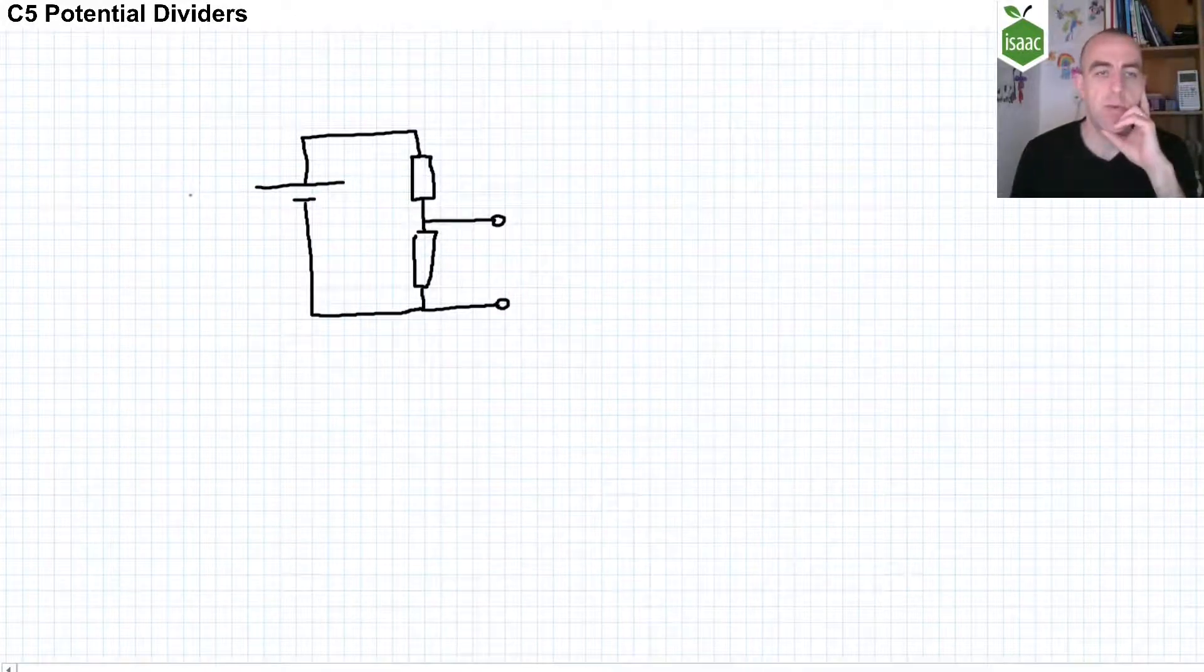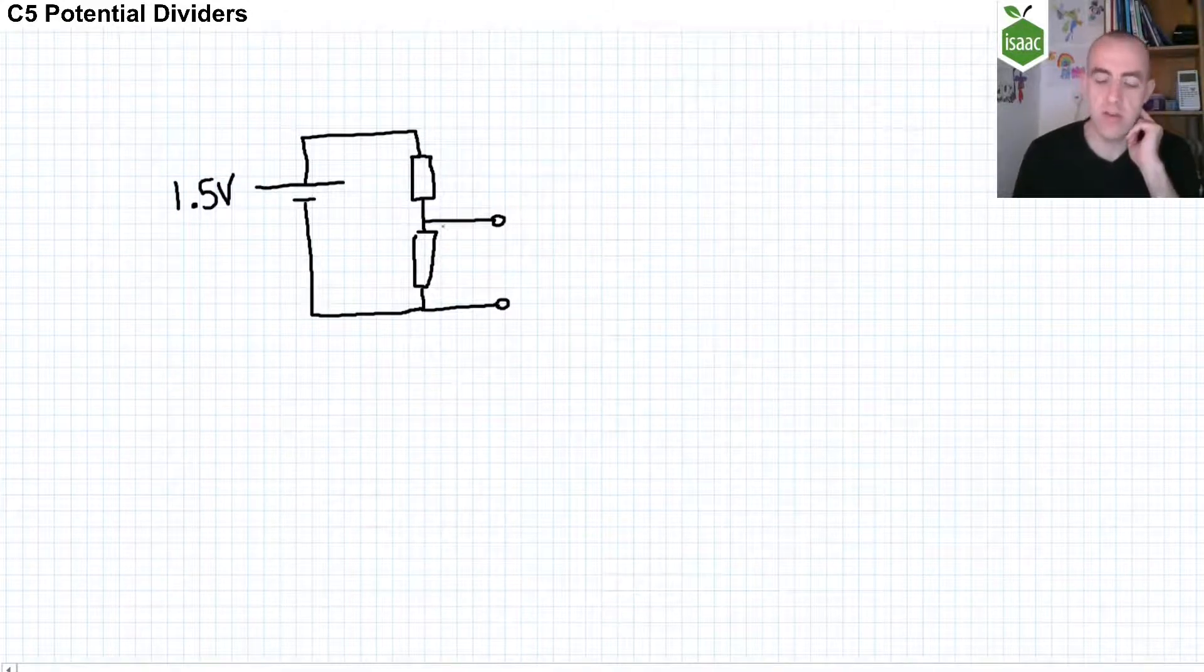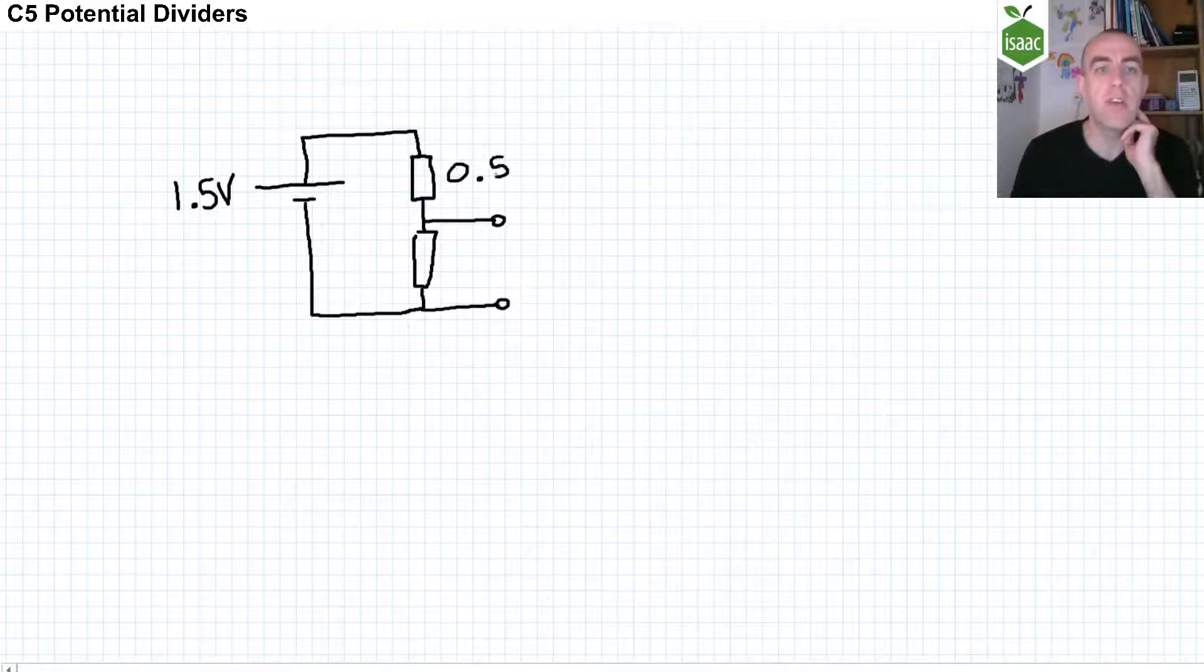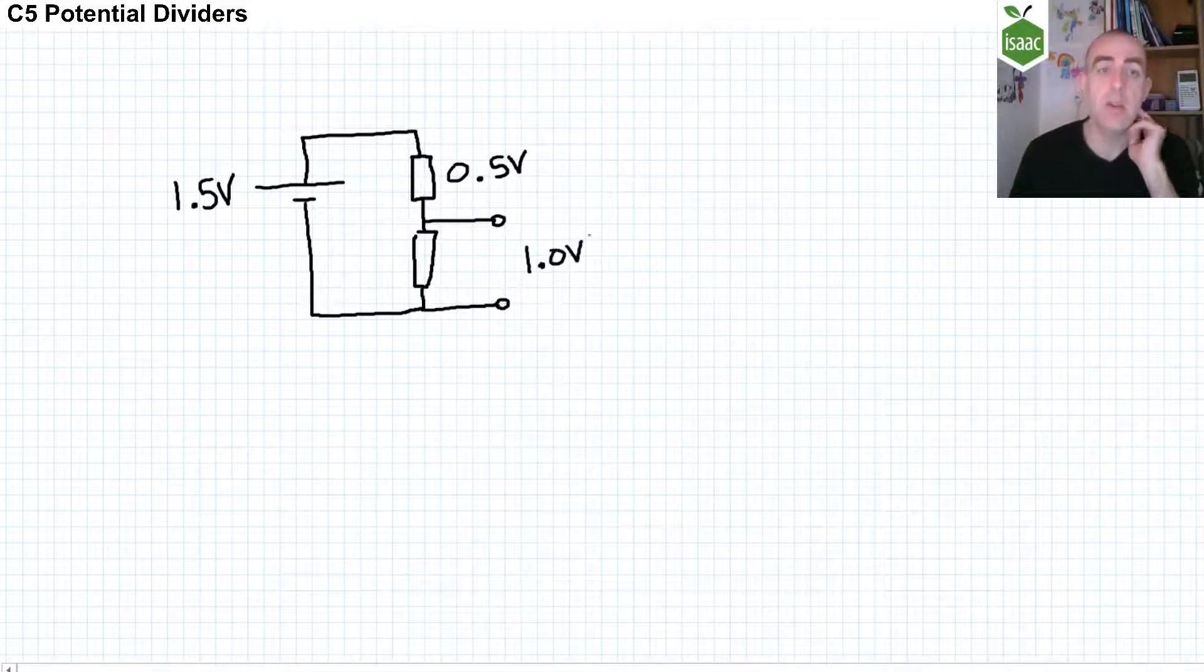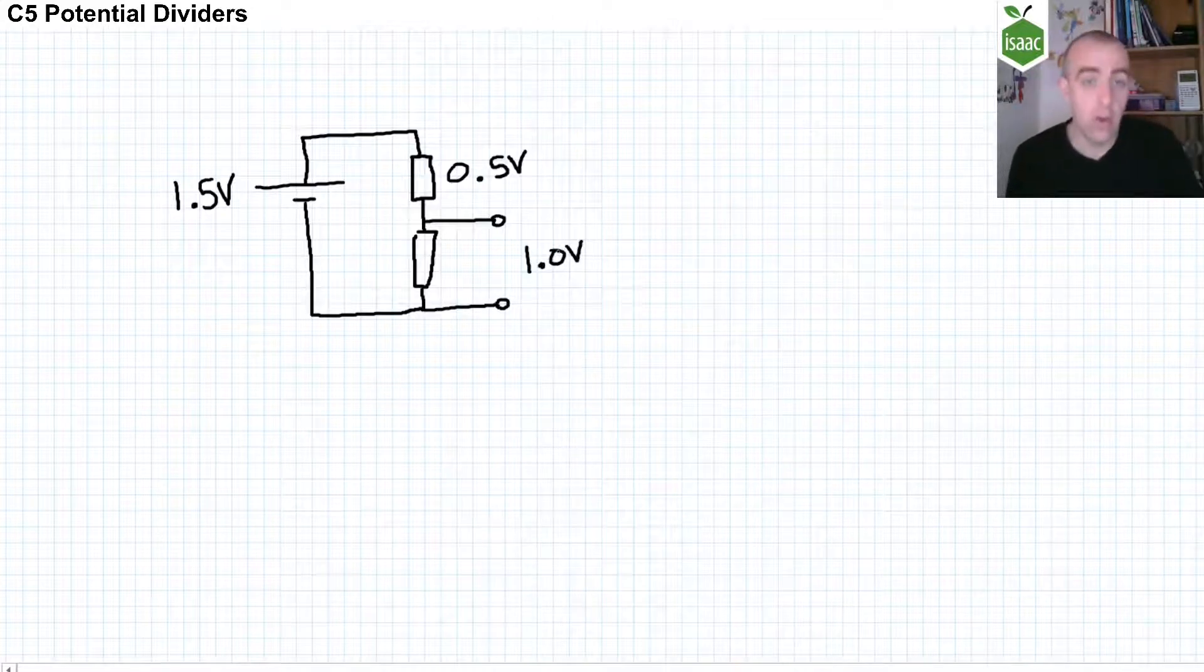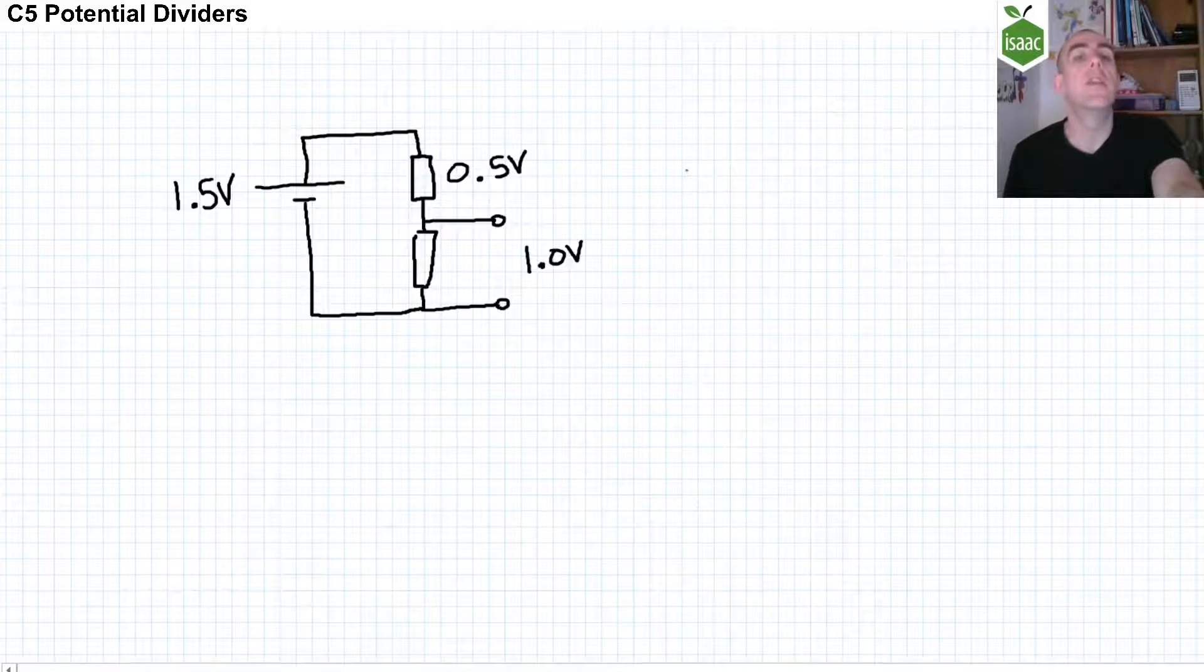If I give you an example, imagine this is 1.5 volts and we choose our resistances for these two components such that the voltage across the first resistor is 0.5 volts. Then we know that the voltage across the second resistor is 1.0 volts because of Kirchhoff's second law. So how do we choose two resistors that divide the potential how we want to?